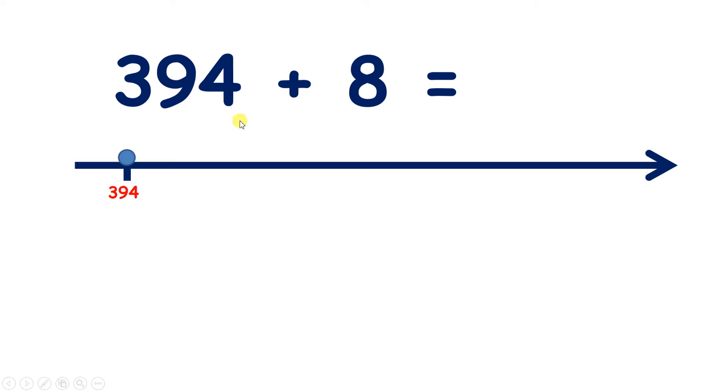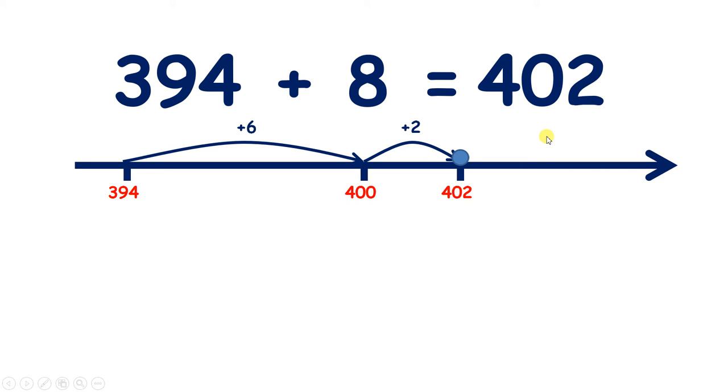And again, we could use bridging. So if we're on 394, our next multiple of 10 is 400. So we can add 6 to get to 400, and then add 2 more, so that we've added 8 altogether. So 394 add 8 equals 402.